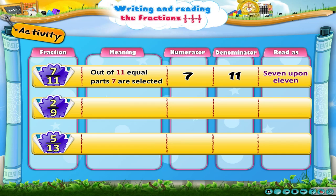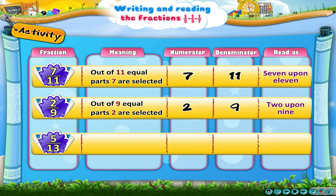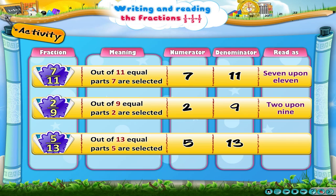Let us look at the second fraction. It means out of nine equal parts, two are selected. Here two is the numerator and nine is the denominator. We read this fraction as two upon nine. See what the third fraction means — out of thirteen equal parts, five are selected. So the numerator is five and the denominator is thirteen. We read this fraction as five upon thirteen.